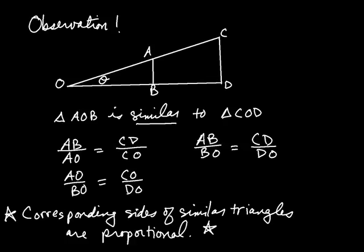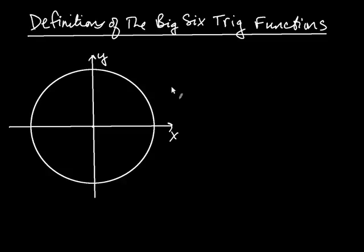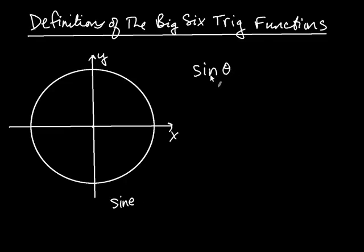With that knowledge, let's go ahead and define the big six trig functions. We'll start with the definition of sine. Sine is written S-I-N, but it's really sine, S-I-N-E. Sine always takes an argument — you never see S-I-N by itself. Sine of an angle is defined in the following way.